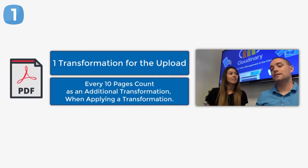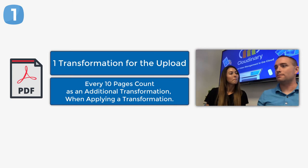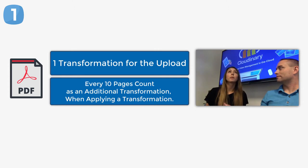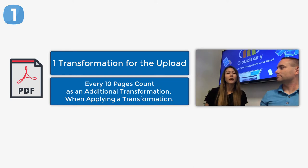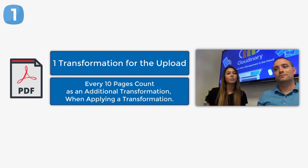The last but not least is PDF files — you can definitely store those inside your Cloudinary account. The upload of the original document counts as one transformation. The additional transformations depend on how many pages are actually in the PDF, so you really want to make sure you count that as well. For PDF files, it's once again one transformation per upload, and then after every 10 pages we also count an additional transformation. So it's kind of similar to animated GIFs with every 10 frames, but here it's every 10 pages.